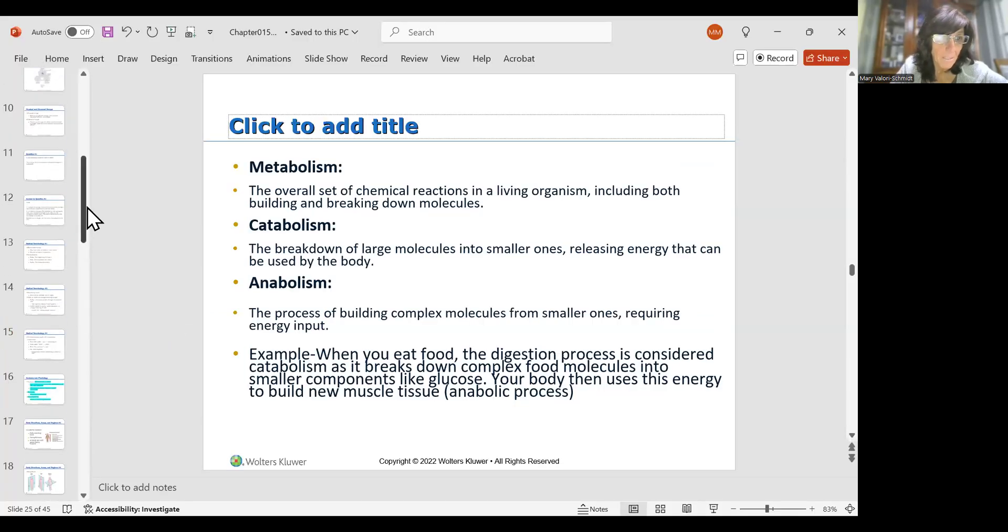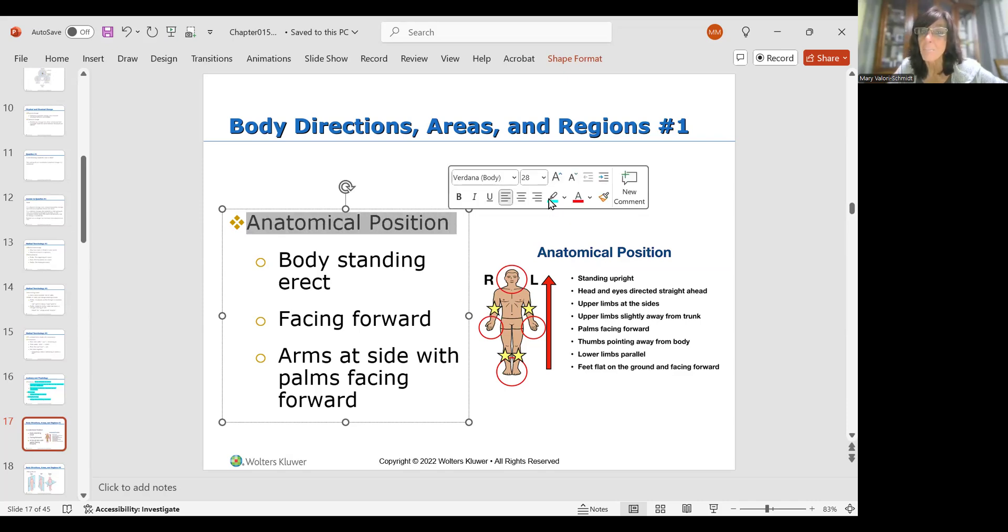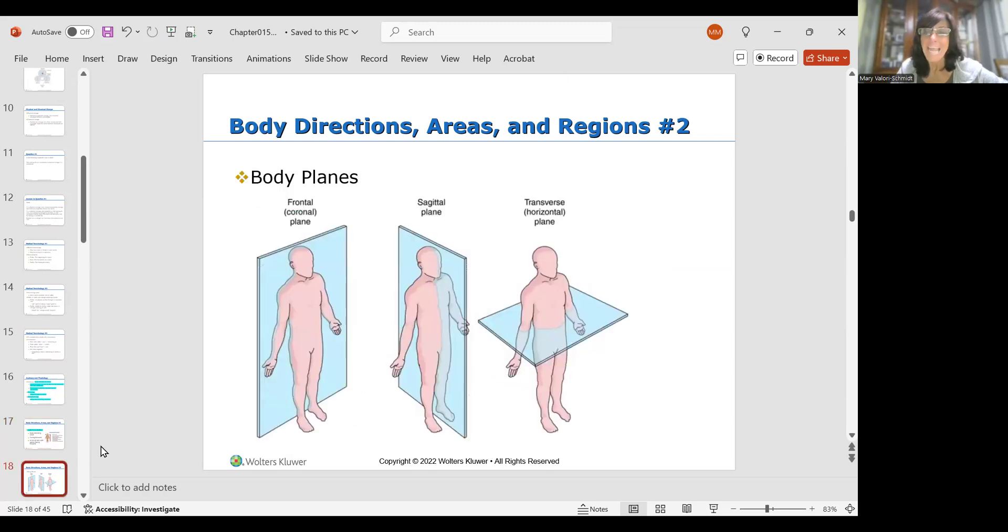Body directions and areas. Last night I talked a little bit about the anatomical position, which is really the correct grammar. What that is, is the body standing erect, facing forward, arms at sides and palms facing forward, just like this little guy. That is the anatomical position, and you all should know that and be able to describe it with words.